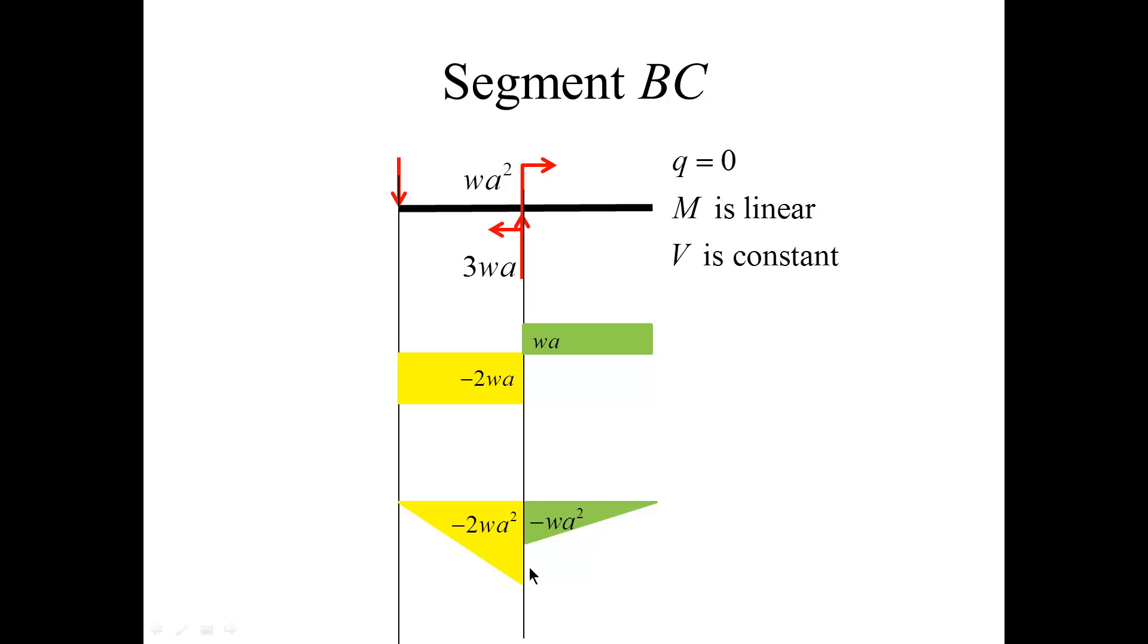Similarly, the couple Wa² will produce a jump equal to Wa², and therefore I start on the left of this segment from minus Wa². The segment is not loaded, therefore I have a constant force Wa, and the slope is equal to Wa, so that as a result we arrive at zero at the right point of this segment, or at the point C.